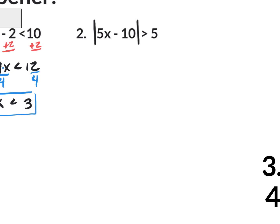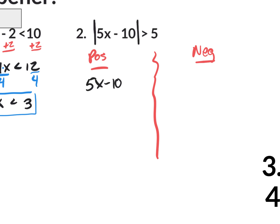There's no minus 7 back here where you'd have to go plus 7. It's already isolated for you, so we can jump right into the second part of solving, which is the positive situation and the negative situation. The positive situation: same thing without the absolute values, so 5x minus 10 is greater than 5. For the negative situation, it's the same exact thing, but you're going to change that inequality — instead of a greater than, you make it a less than — and you're also going to put a negative on that number 5. So you change the inequality and you change the sign of the right side.